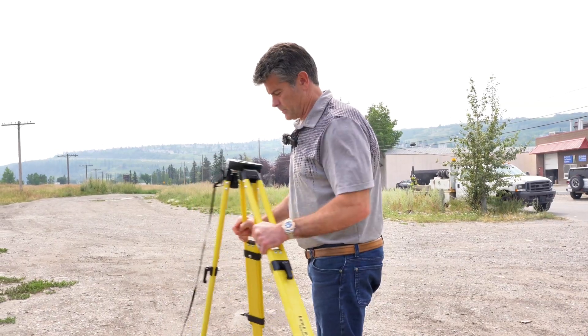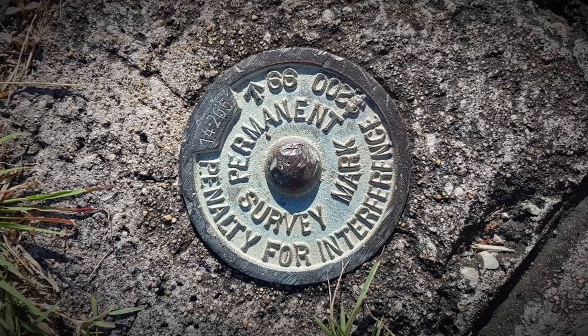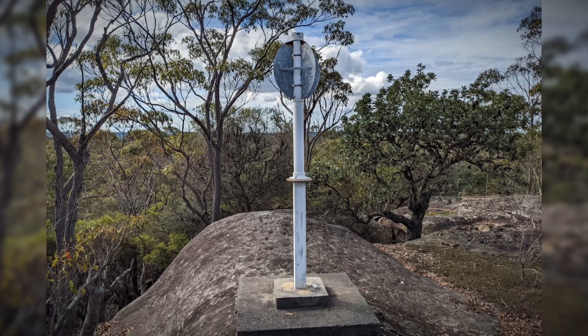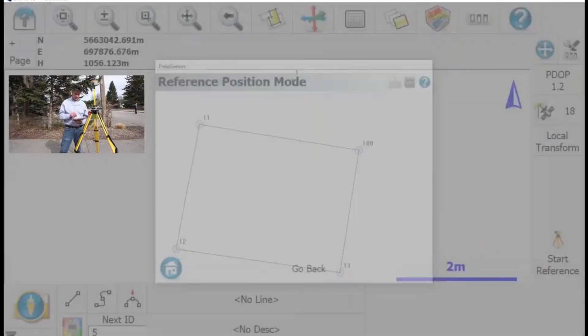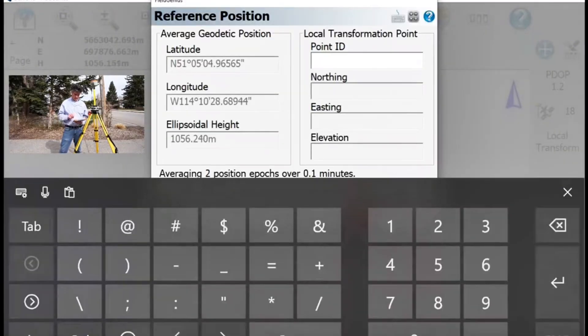If you're looking to set up your base on a known point like a benchmark or a survey marker or anything like that, what you actually need to do is use a local transform setup and that ties the lat long of your base to a local coordinate that's the northing and easting.